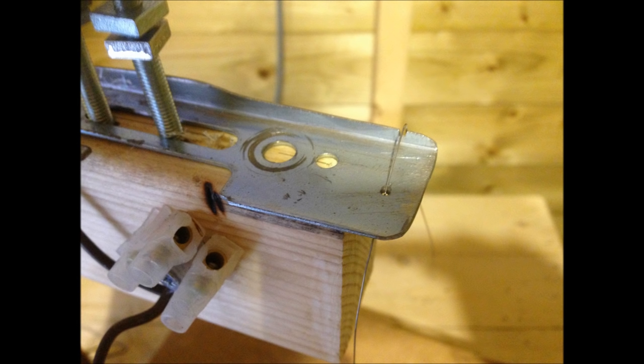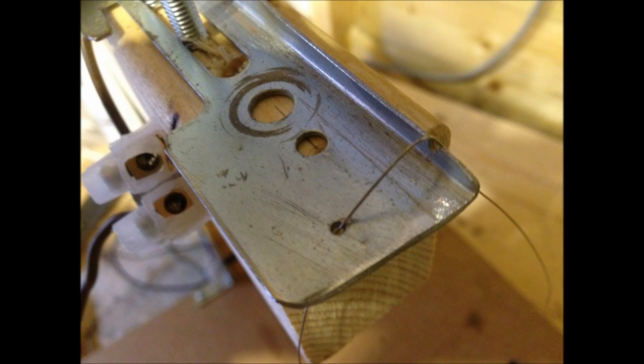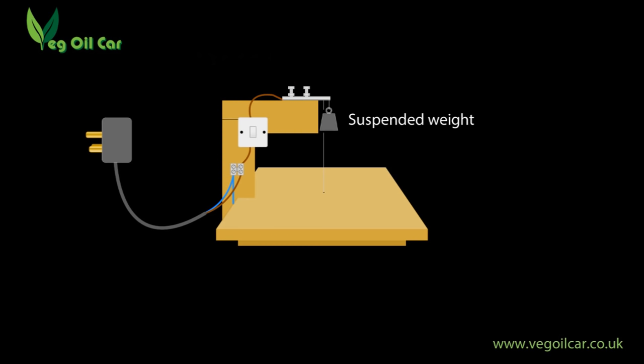You can see from the video just how much play there is in the bracket. With careful adjustment, a hell of a lot of patience and the use of a good square, a perfectly true wire is achievable. But of course, that's not doable until the nichrome wire is under tension.